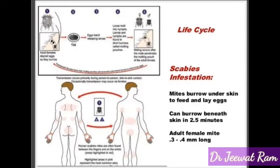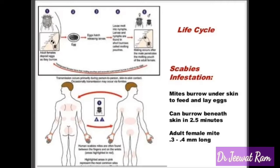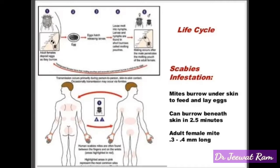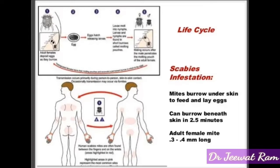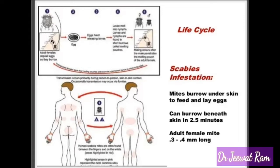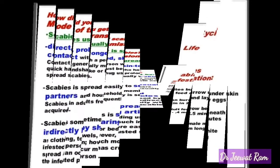In this picture you can see the life cycle of scabies. Mites burrow under the skin to feed and lay eggs. They can burrow beneath the skin in 2.5 minutes. Adult female mites are 3 to 4 millimeters long.